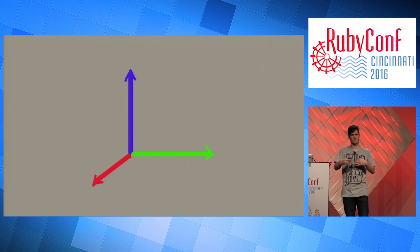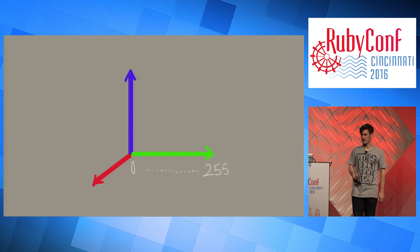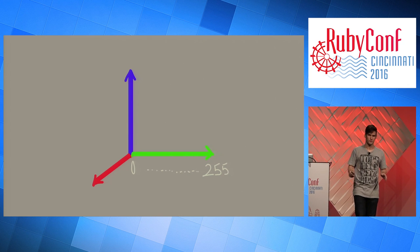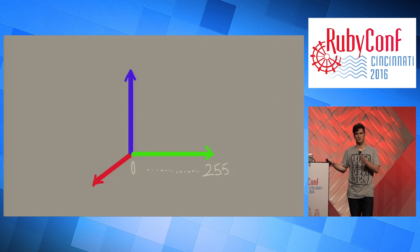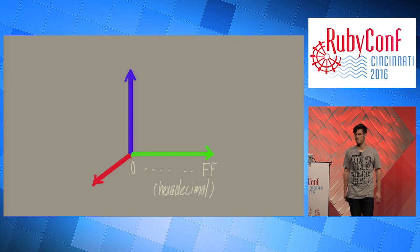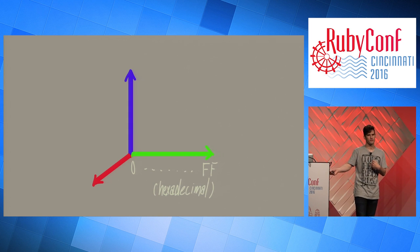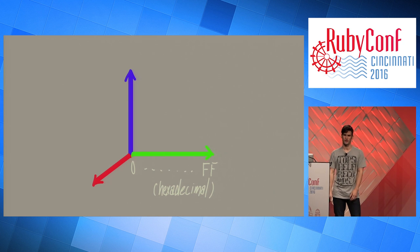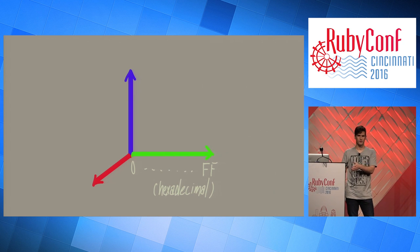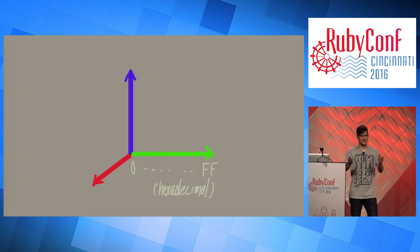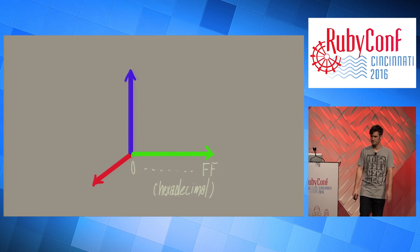In the computer world, not the biology world, we talk about these from 0 to 255, or maybe you're more familiar with 0 to FF in hexadecimal. When we display a full color, we'll talk about red, green, and blue — you'll see that in CSS as a six-digit hex number.